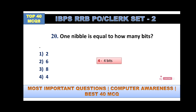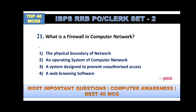One nibble is equal to four bits. Eight bits equal one byte, and 1024 bytes equal one kilobyte. I repeat: one nibble equals four bits, eight bits equal one byte, and 1024 bytes equal one kilobyte.